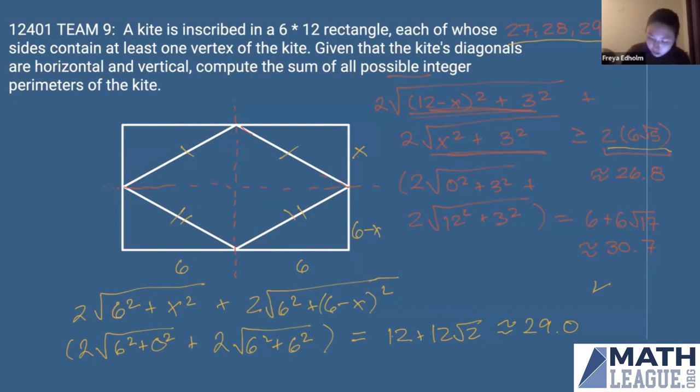Our final answer is going to be the sum of 27, 28, 29, and 30, which is going to be equal to 57 times two. And that is 114. So that is the final answer for team number nine. Thank you all.